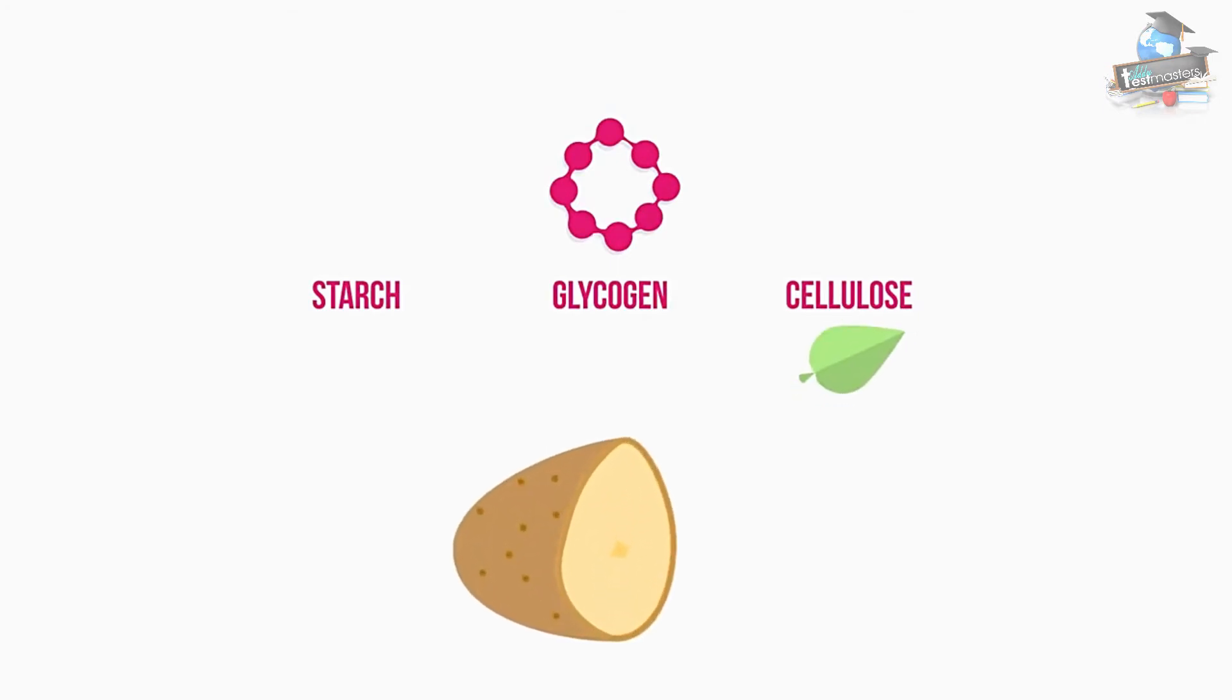Cellulose is found in plant walls, and starch is the storage unit for surplus glucose made in photosynthesis. Glycogen is the storage unit used by animals for surplus glucose and is found in the liver and muscle tissues.